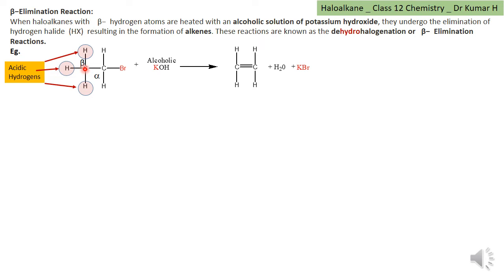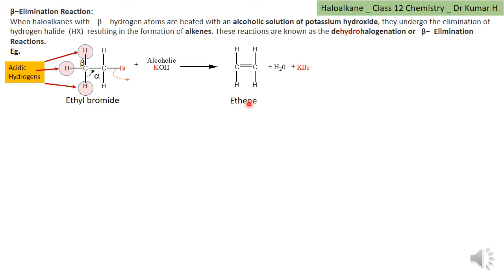Once OH- takes away H+, the bond present between beta carbon and hydrogen — the two electrons between beta carbon and hydrogen — migrates to alpha and beta. Once it migrates, the Br will be kicked away. Br combines with K to give KBr (potassium bromide), and H+ combines with OH- to give water. There will be a double bond between alpha and beta, leading to the formation of ethene.